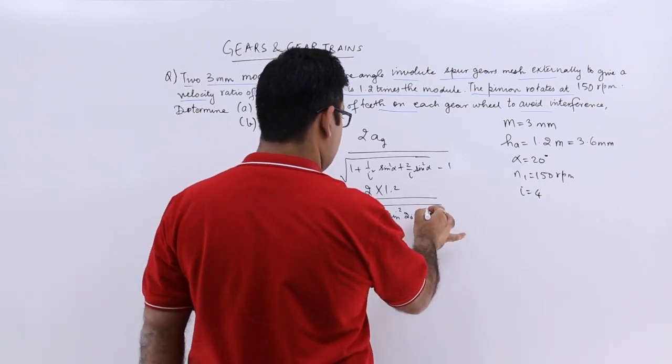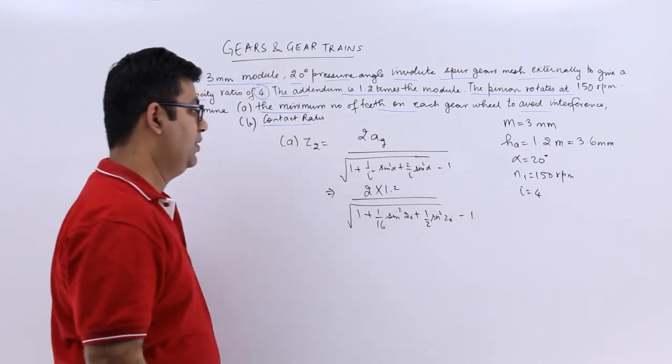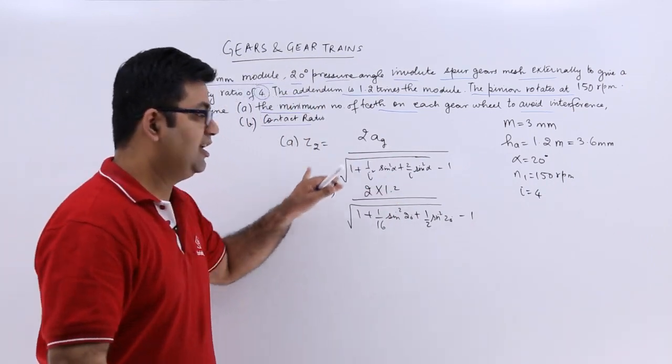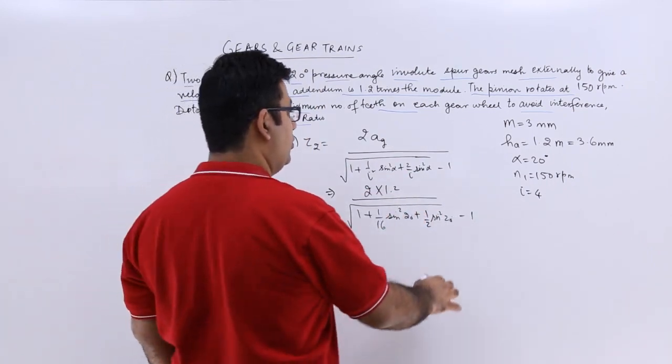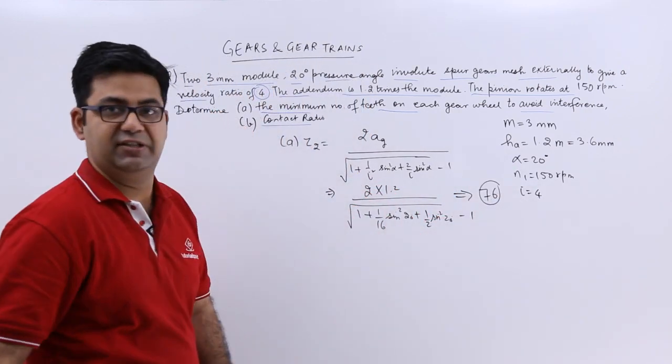2 into 1.2 upon 1 plus 1 by 16 sin square 20 degrees plus 2 by 4 is 1 by 2, again this minus 1. This equation would give you a value which is approximately 76. So z2 is 76.